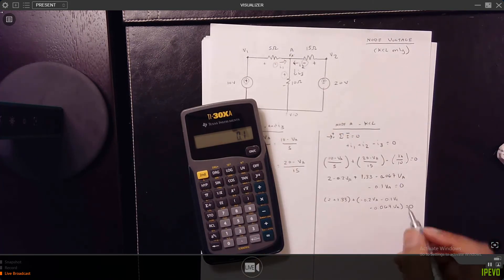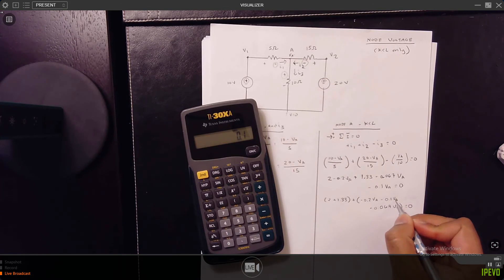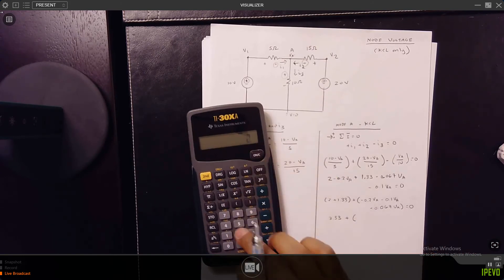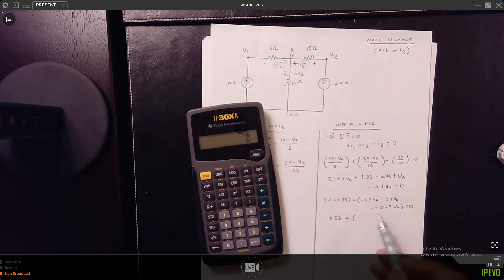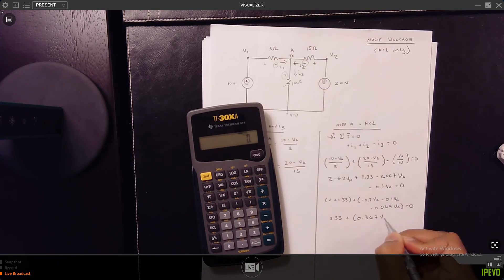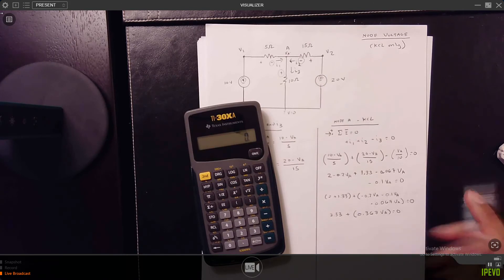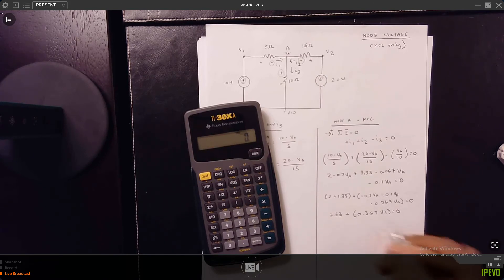So now what you want to do is you want to add up like terms. So here there's 2 plus 1.33, minus 0.2 VA, minus 0.067 VA equals zero. So this is 3.33 minus 0.2 minus 0.67 VA equals 0. So if we flip to the other side, we get 3.33 equals 0.367 VA. Why am I not skipping steps? I'm not skipping steps because I make a mistake because I'm doing a video.